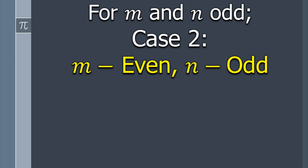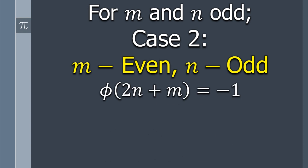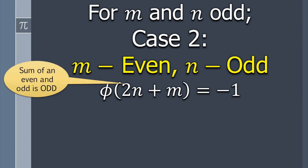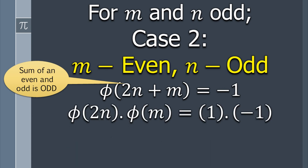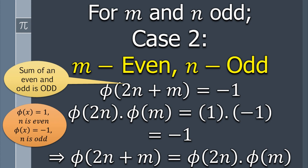For case number two, let m be an even integer and n be an odd integer. Then φ(2m + n) = −1 because 2m + n gives an odd integer, and for odd integers φ takes the value −1. Next, φ(2m) × φ(n) = 1 × (−1) = −1. Hence φ(2m + n) = φ(2m) × φ(n). Case 2 is proved.